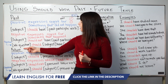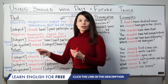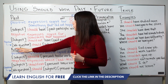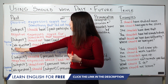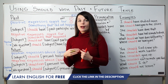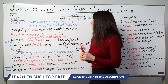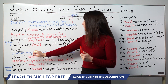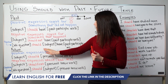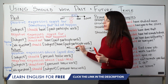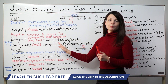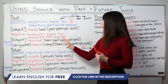I've also added a simple question structure — an information question using a wh-question word. Wh means who, what, when, where, why, how — those kinds of things. So we use a wh-question word plus should, plus our subject, plus have, and the past participle verb. I'll explain some examples of this in just a moment.